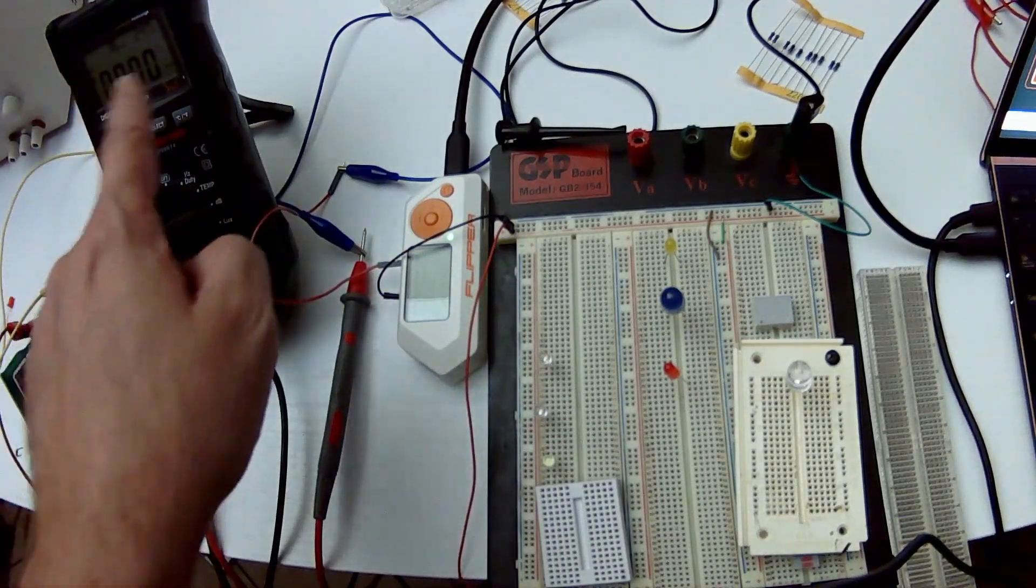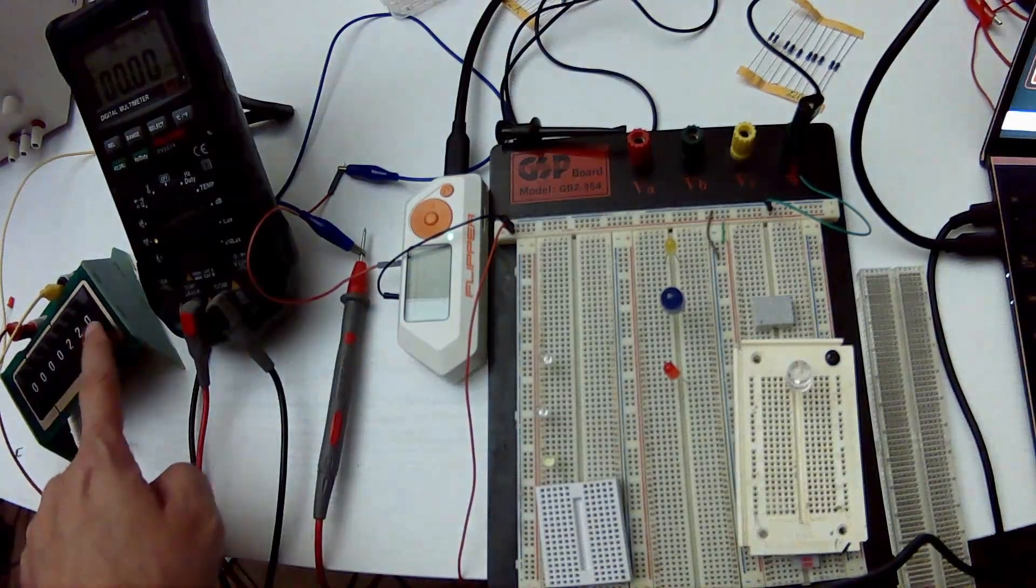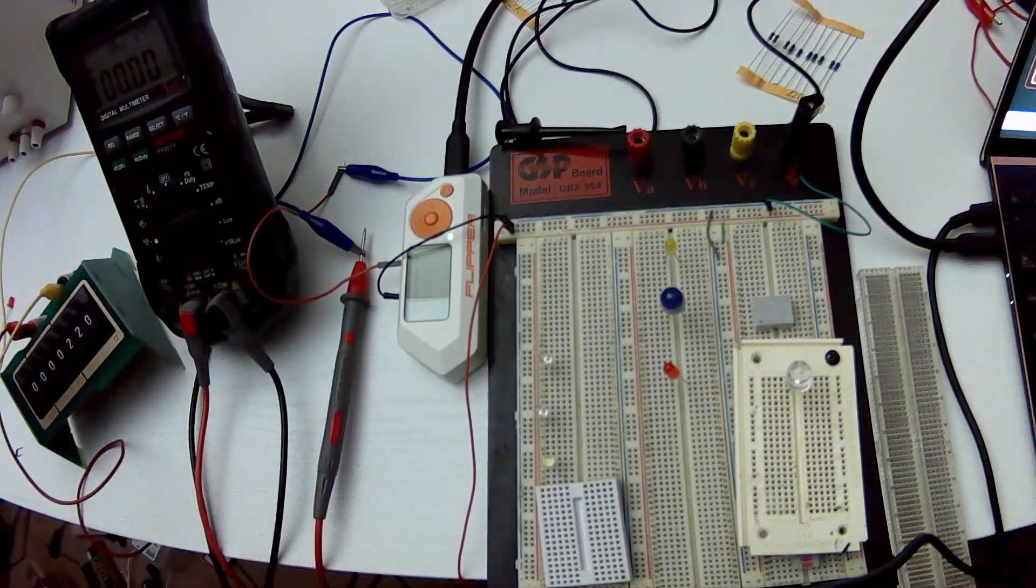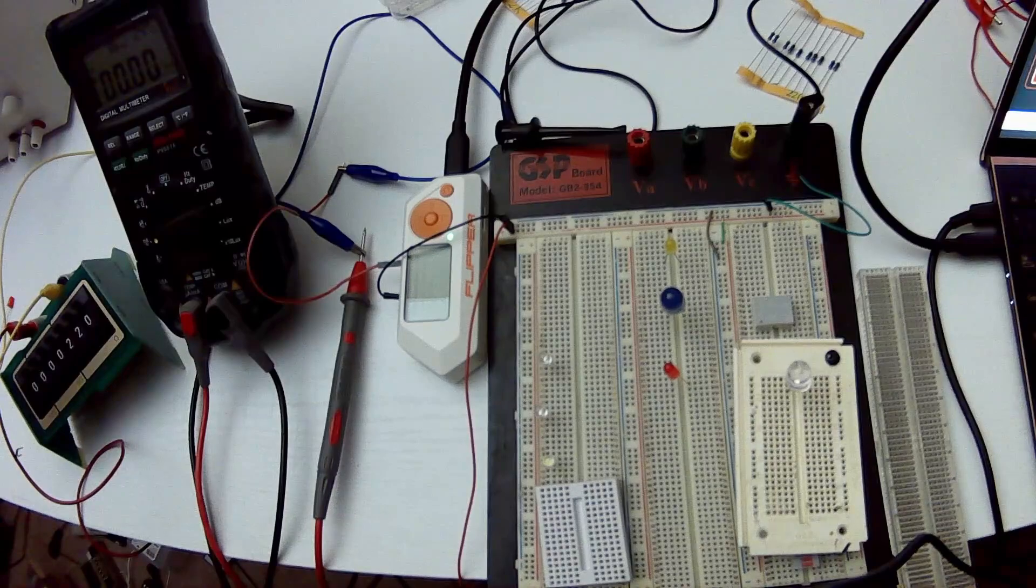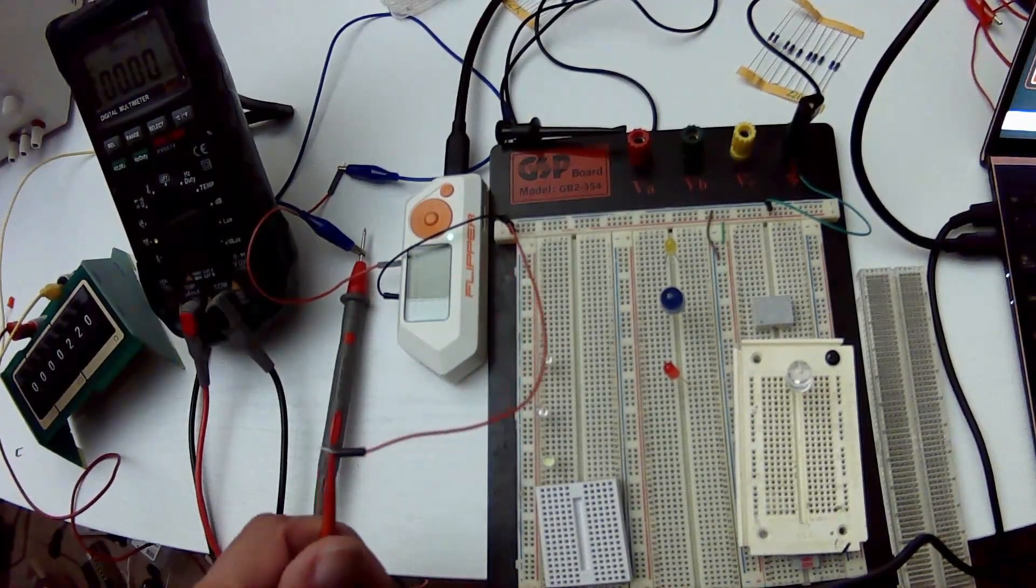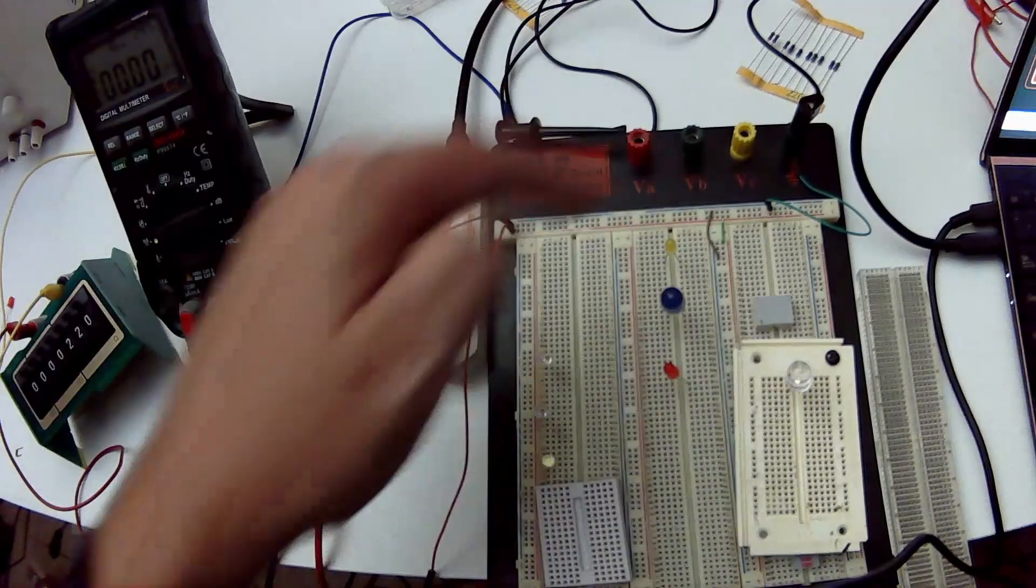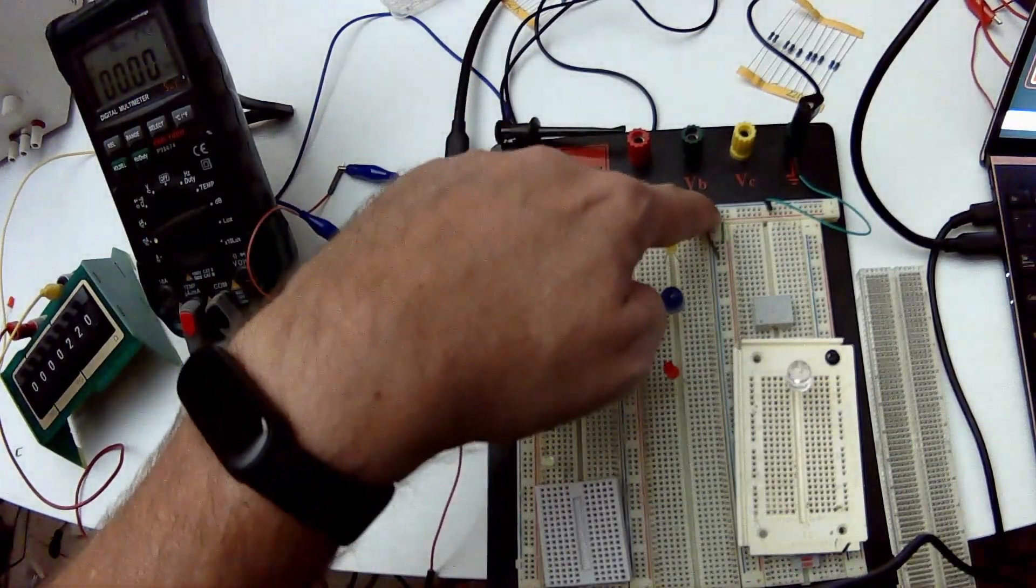So I have 3.3 volt pin on the flipper going into my amp meter, which then connects into a variable resistor, which I'm set at 220 ohms. And then the other side of that clip goes into the red rail, which goes down to the red rail.